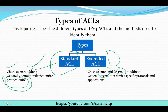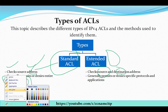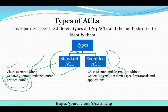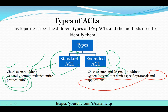If we talk about extended ACL, it checks both source as well as destination. The next important thing about extended ACL is it generally permits or denies specific protocols and applications. This is a very important difference: standard ACL checks source only, while extended ACL checks both source and destination, and permits or denies specific protocols and applications.